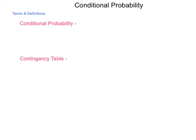With basic probability and probability of multiple events under our belts, next we're going to look at what is called conditional probability. We're going to begin this with some terms and definitions.